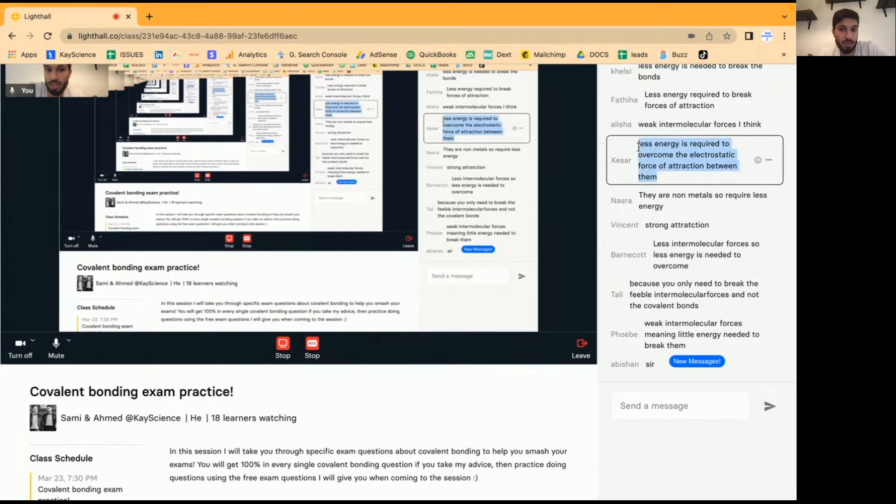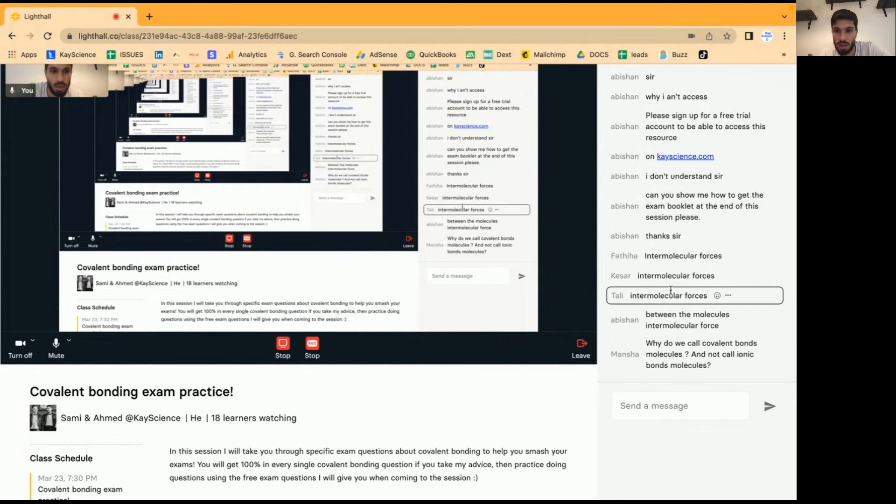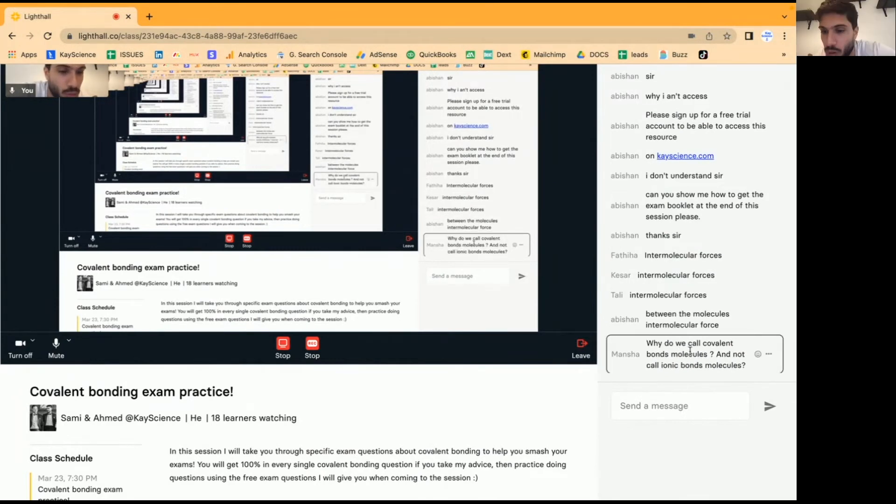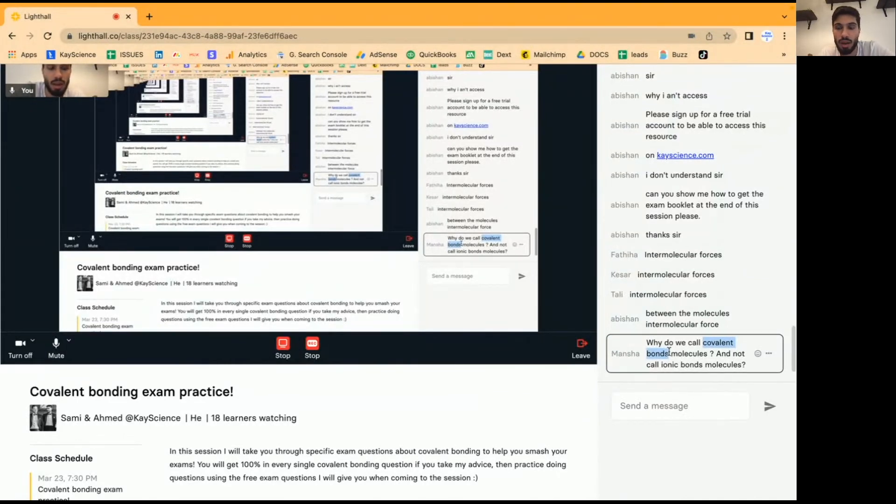It requires this much information to answer the question. No, covalent bonds are not molecules. Covalent bonds are the bonds which hold the atoms together. The molecule itself is the group of atoms held together by covalent bonds. And compounds, specifically compounds, generally is where you have ions with ionic bonds between the ions. That's the true definition. But the term molecule and compound are interchangeable. They're often used by people to mean the same thing.